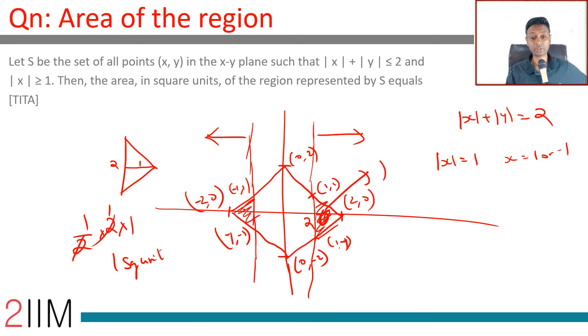Here there is 1 square unit, here there is 1 square unit. The area in square units represented by S is 2 square units. Wonderful question. You need to be comfortable with drawing the diagram for this, imagining it, and then drawing the diagram, finding the shaded region, and then simplifying that.